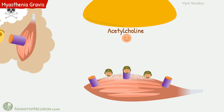As a result, acetylcholine fails to produce an action potential. This ultimately results in weakness of muscle contraction, leading to the various manifestations of myasthenia gravis.